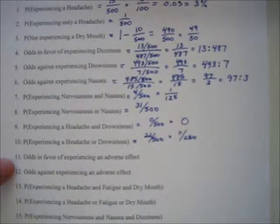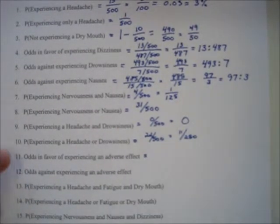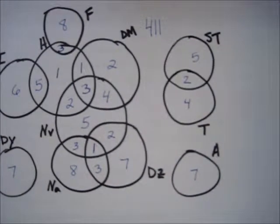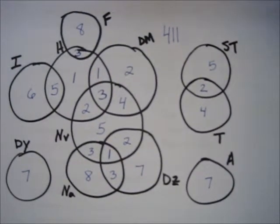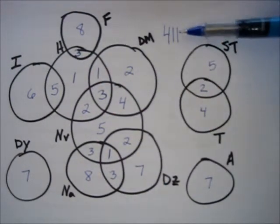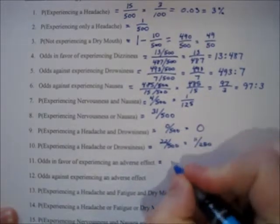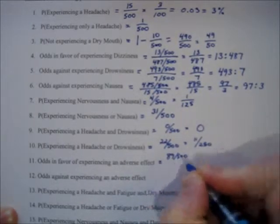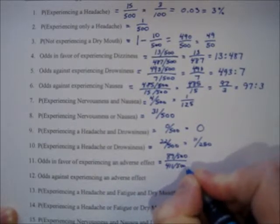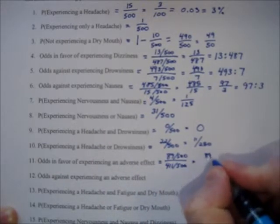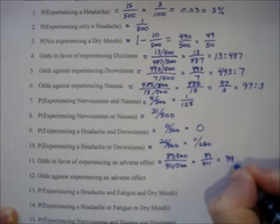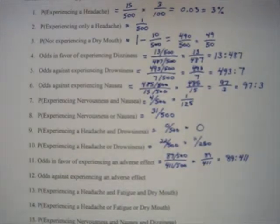Problem 11: odds in favor of experiencing an adverse effect. If you're anywhere in any circle, you experienced an adverse effect. We know 411 people didn't, which means 89 people did. So 89 out of 500 divided by 411 out of 500 gives us 89 over 411 — the odds statement is 89 to 411.